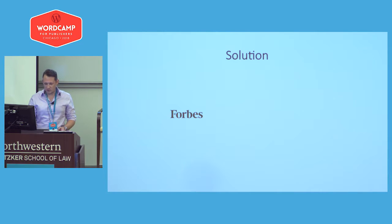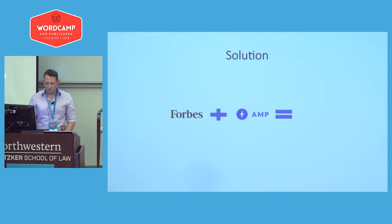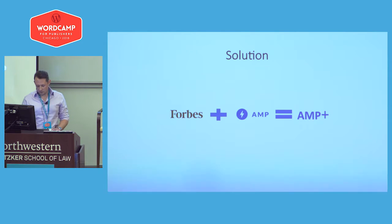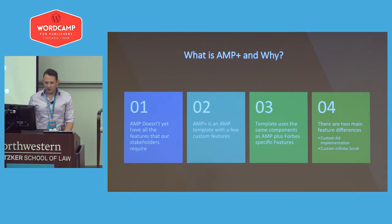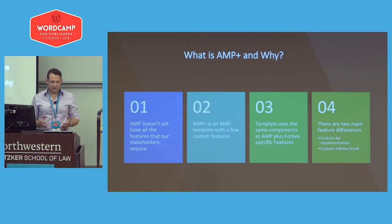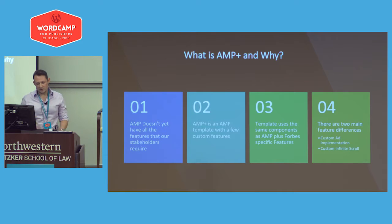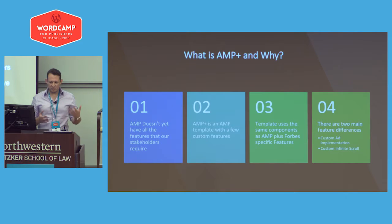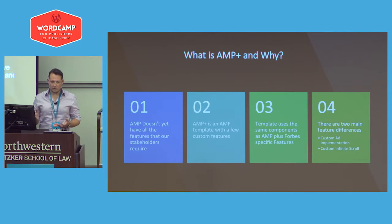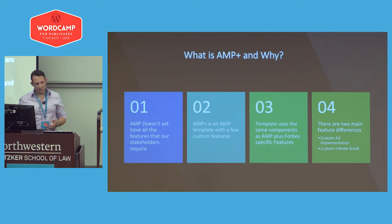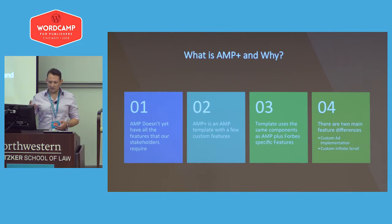The solution we came up with was to combine our canonical Forbes mobile templates with AMP — we created something we called AMP+. Originally we wanted to go with canonical AMP, but we realized we needed a few features that our stakeholders require that canonical AMP does not support yet. So we used 95% of AMP templates, components, and performance optimizations, and added our own custom ad implementation and custom infinite scroll.